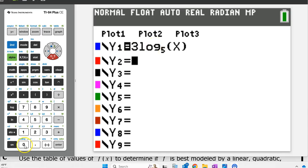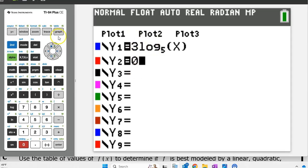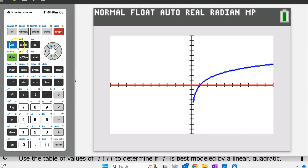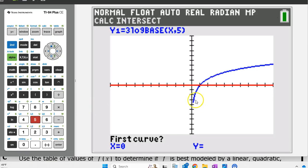Since we already have g of x on y1, we just need to put 0 on y2 and find the intersection point between these. Let's look at the graph and see what we've got. This is a pretty nice graph as is. We just need this intersection point right here. So let's hit 2nd, trace, option 5 for intersect.